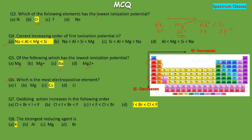The next MCQ asks in which order oxidizing tendency of elements increases. As we move down the group, reducing tendency increases but oxidizing tendency decreases. The next MCQ asks which is the strongest reducing agent among the given options including magnesium, aluminium, and potassium. Potassium has the lower ionization energy compared to the others; therefore it has the greatest reducing tendency and is the strongest reducing agent. I hope you liked this video. Thank you.